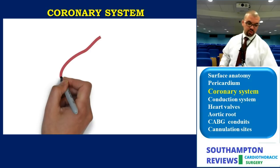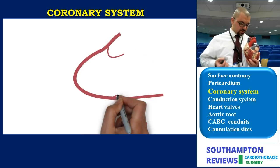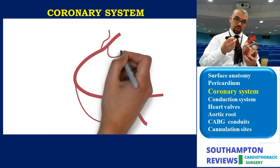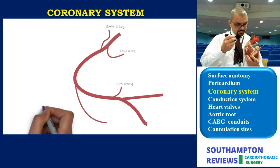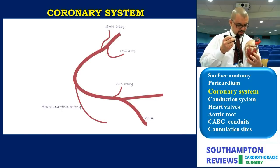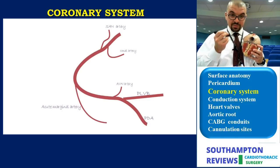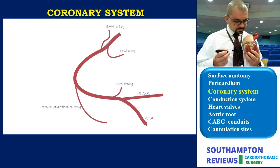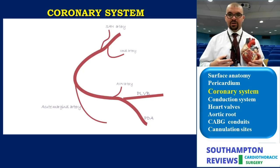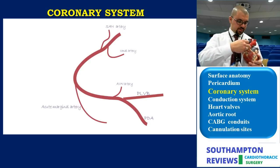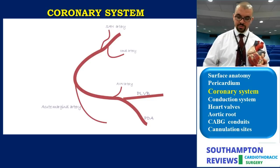Next is the coronary system. Using this model: there are two main coronary artery systems. The right coronary artery emerges from the right coronary sinus, traveling through the atrioventricular groove all the way back to end at the posterior descending artery (PDA) and the posterior left ventricular branch (PLV). Along the way, several branches emerge including the conus artery, the sinoatrial node artery traveling to the SA node, and the acute marginals.